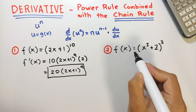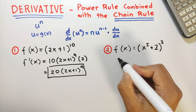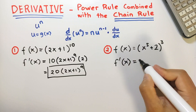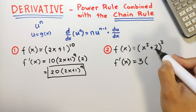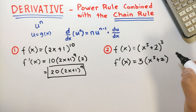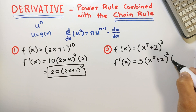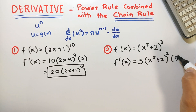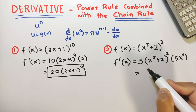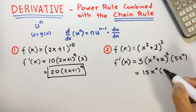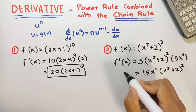For example number 2, we have f of x equals x raised to 5 plus 2, cubed. Its derivative is equal to bring down the exponent as a coefficient, so that's 3 times — copy the base, x raised to 5 plus 2 — and then subtract 1 from the exponent, so we have 2. Then multiply by the derivative of the base. The derivative of x raised to 5 using the power rule is 5x raised to 4, and the derivative of the constant 2 is 0. So the final answer is 15 times x raised to 4, times x raised to 5 plus 2, squared.